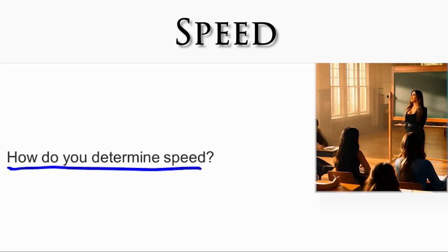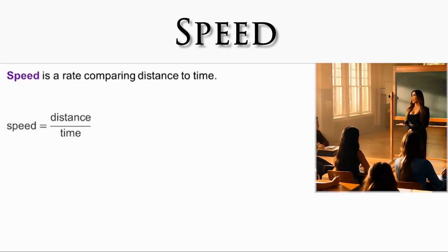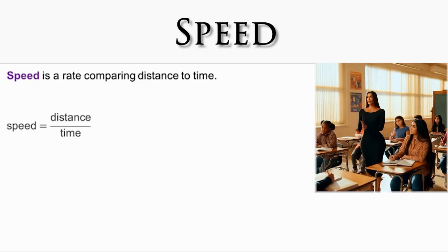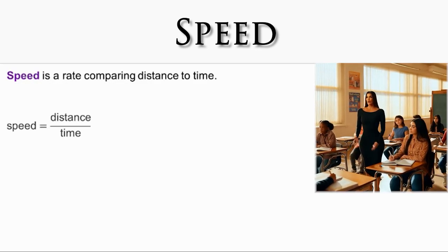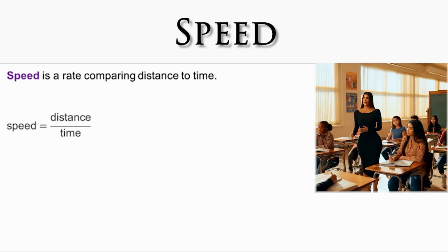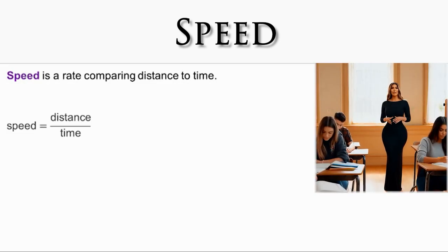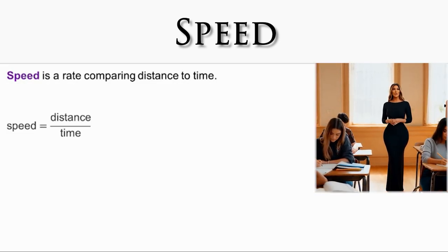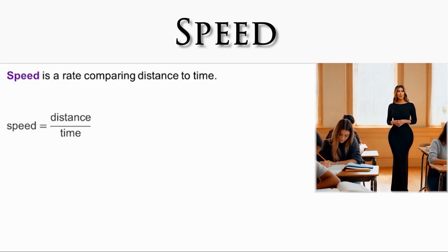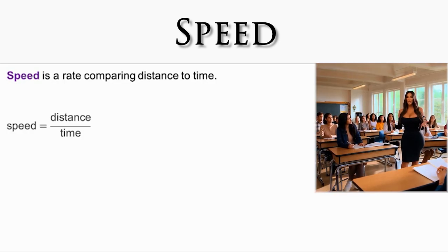Let's explore what speed is and where it comes from. Speed measures how fast something is moving. There are tools that measure speed. However, we can calculate speed indirectly by measuring distance traveled in a specified amount of time. By definition, speed is a rate comparing distance to time.